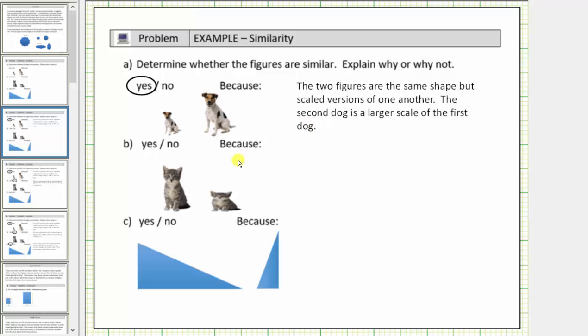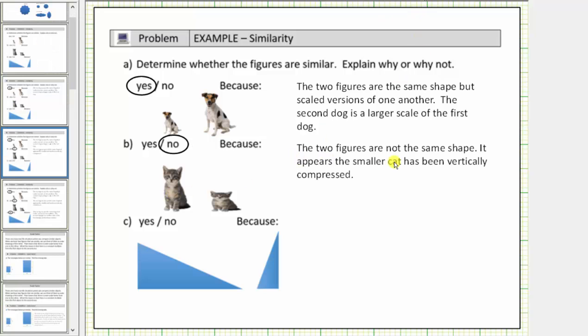Now let's look at the two cats. Notice how these cats are not the same shape. It appears as if the second cat has been vertically compressed. And therefore these two figures are not similar because the two figures are not the same shape. It appears the smaller cat has been vertically compressed.